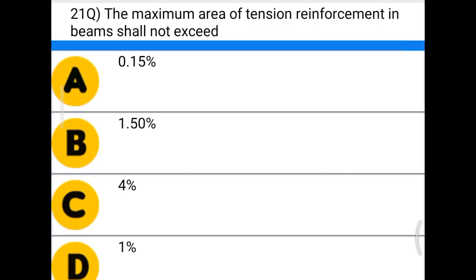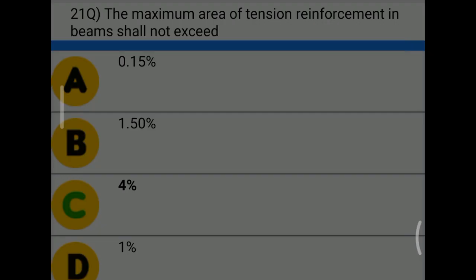The maximum area of tension reinforcement in a beam shall not exceed — option A: 0.15%; option B: 1.50%; option C: 4%; option D: 1%. The correct answer is option C: 4%.